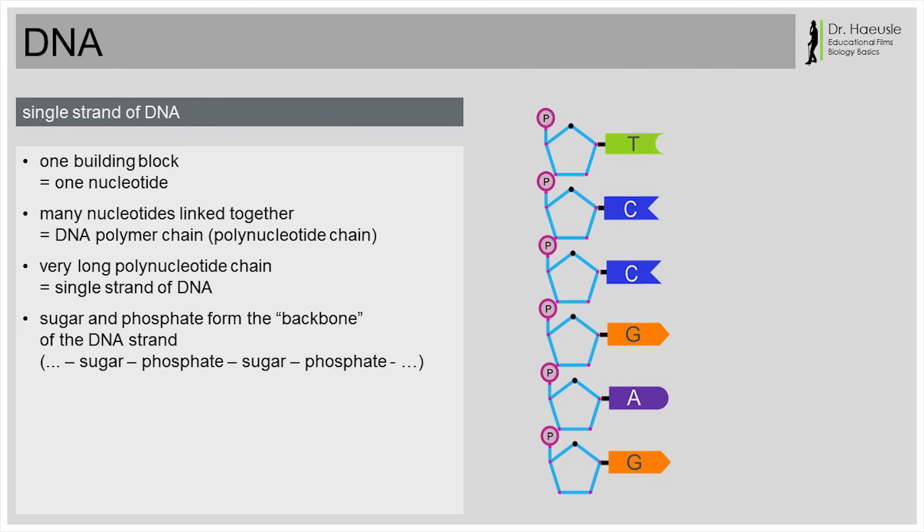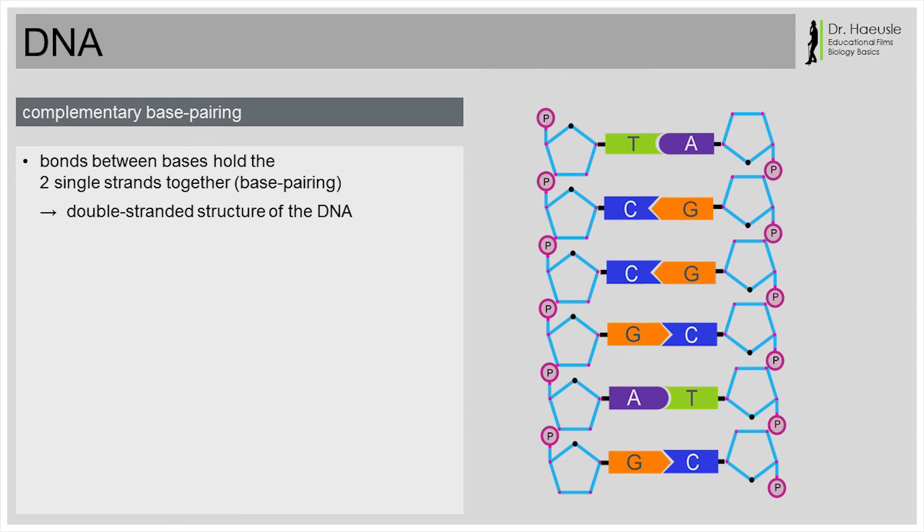But earlier you said the DNA was a double strand. The double strand of DNA consists of two single strands of DNA. These two strands are held together by base pairing.